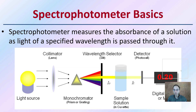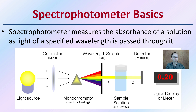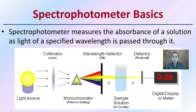The basics of the spectrophotometer is that it measures the absorbance of a solution as light of a specified wavelength is passed through it. Here we have a light source that goes through a lens and through a prism, which basically separates it out into different wavelengths. The machine can then select a very specific wavelength — here we're seeing that yellow wavelength being selected.